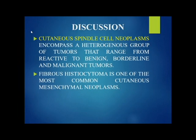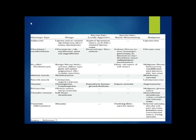Discussion. Cutaneous spindle cell neoplasm encompasses a heterogeneous group of tumors that range from reactive to benign, borderline and malignant tumors. Fibrous histiocytoma is one of the most common cutaneous mesenchymal neoplasms. The WHO classification, according to cell origin, includes adipocytic, fibroplastic, fibro-histiocytic, skeletal muscle, smooth muscle, vascular, perivascular, contraosseous, and uncertain differentiation.